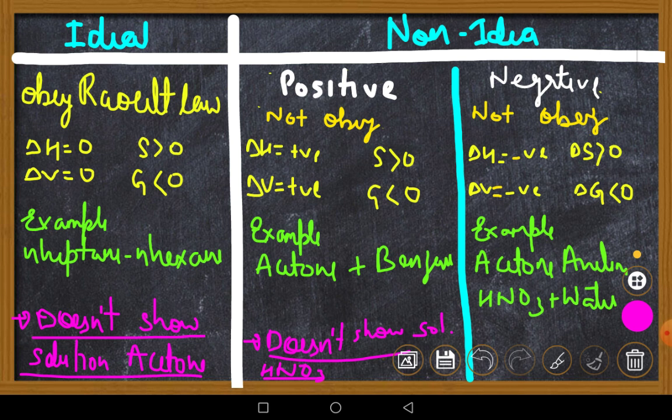Then, the positive and negative - there are always many examples in the NCERT. If you are studying from any coaching, there will be a lot of examples. But in the negative, there will be one example you should remember: Acetone plus Aniline. This is the only one example. If it comes, please remember: Acetone and Aniline. That is all.